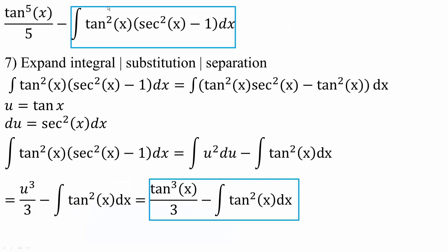Next I need to solve for the second integral by expanding, then doing substitution, then separation. Expanding gives tan squared x times secant squared x minus tan squared x times negative 1, which is minus tan squared x dx. Then I say u is equal to tan x and du is equal to secant squared x dx, which cancels the secant squared x piece, leaving the integral of u squared du minus tan squared x.